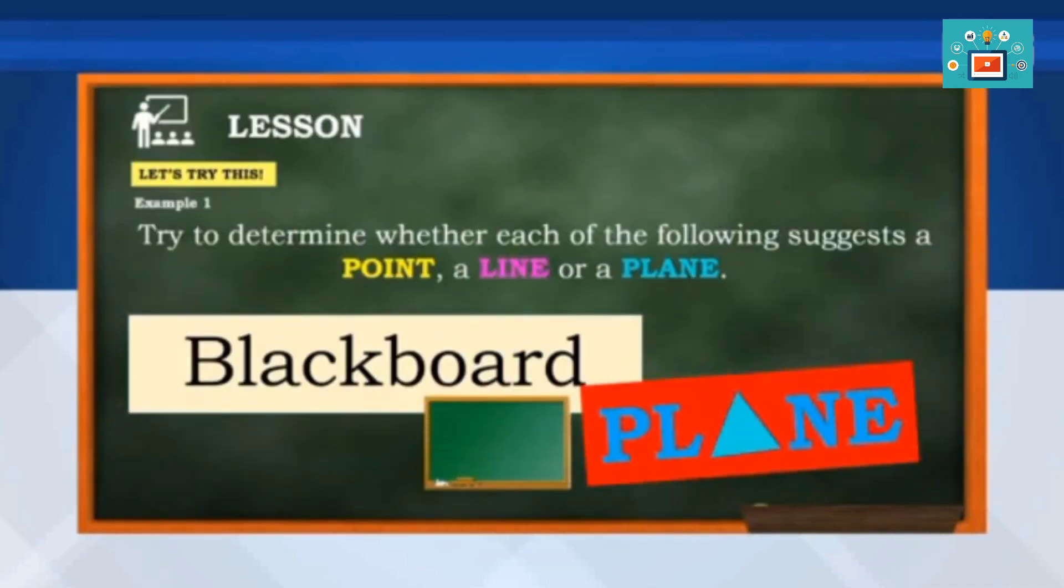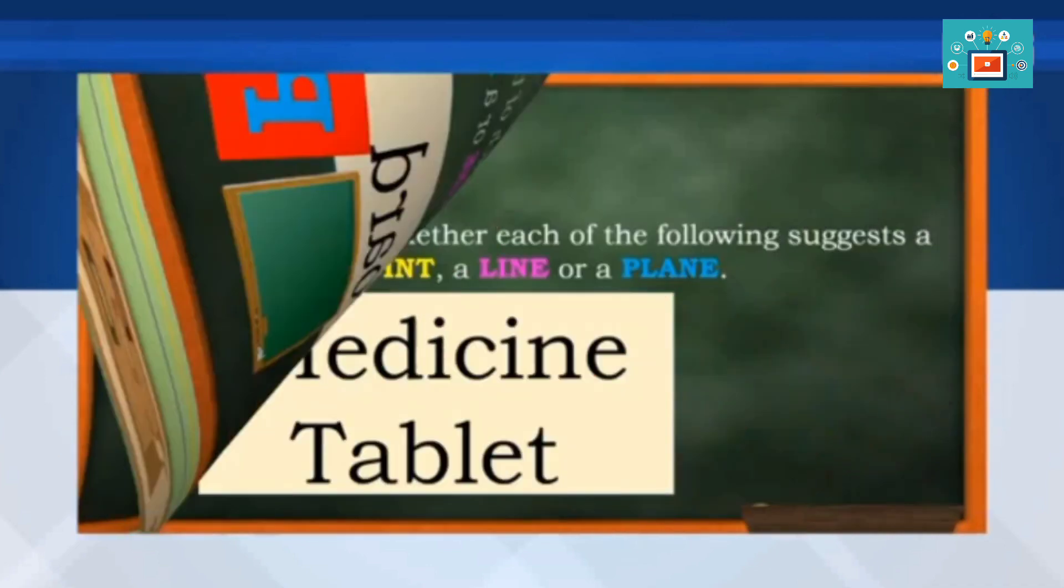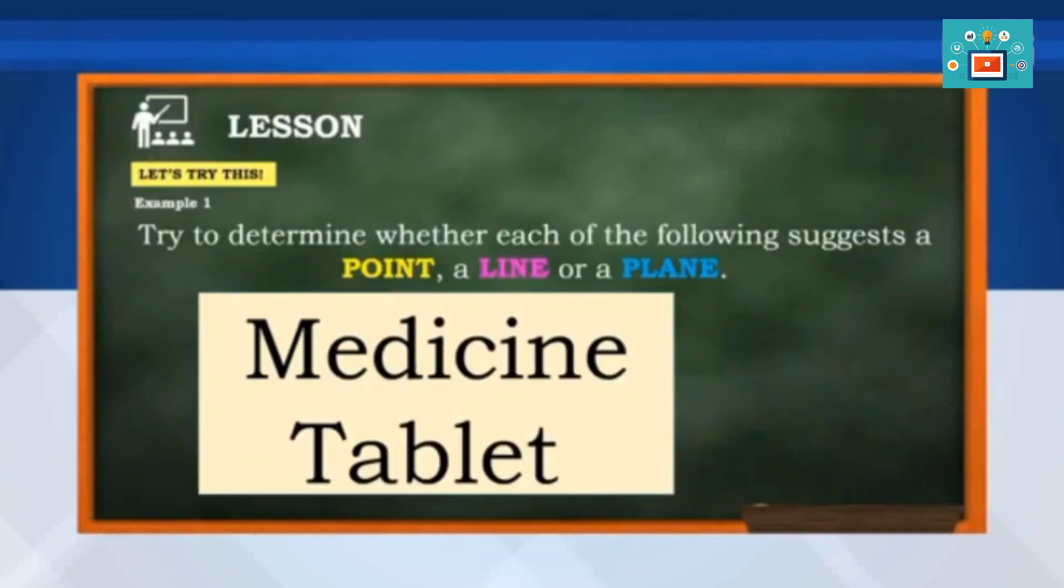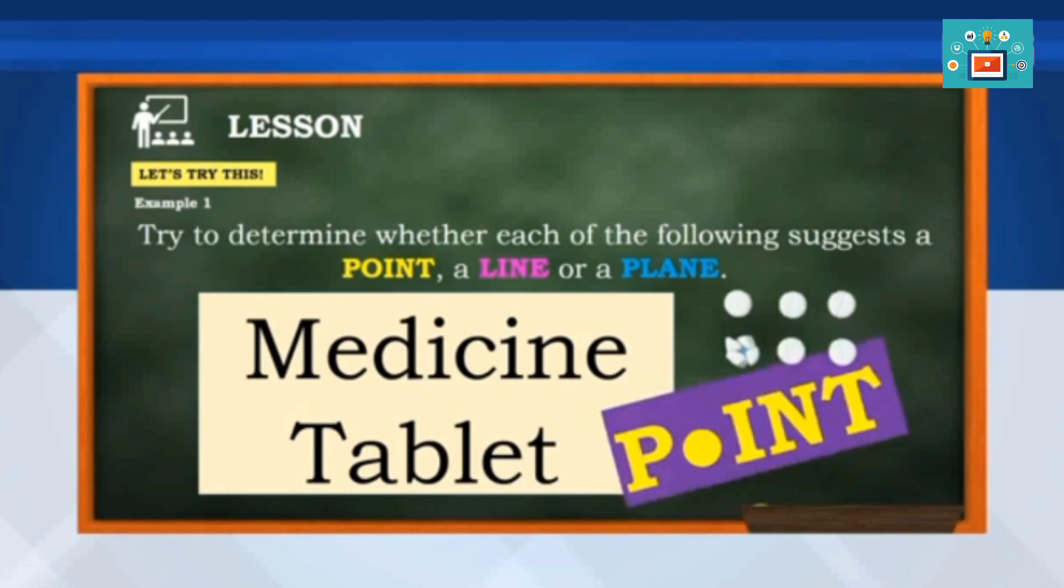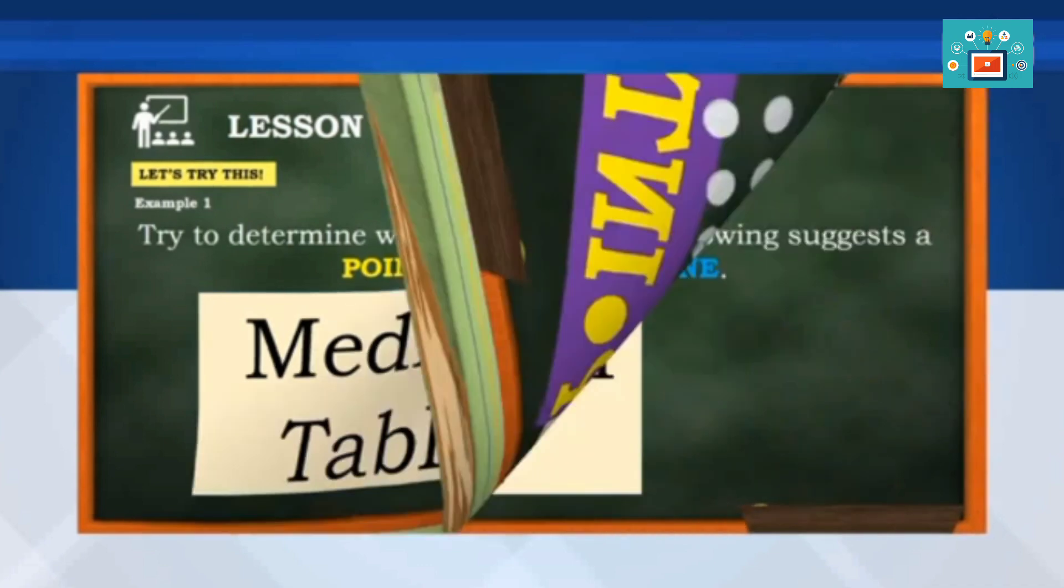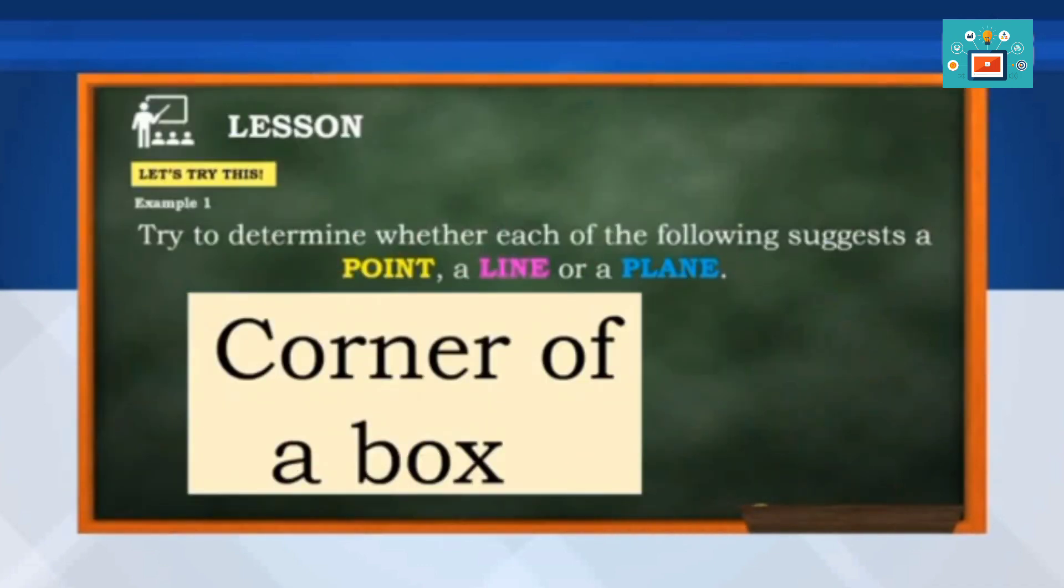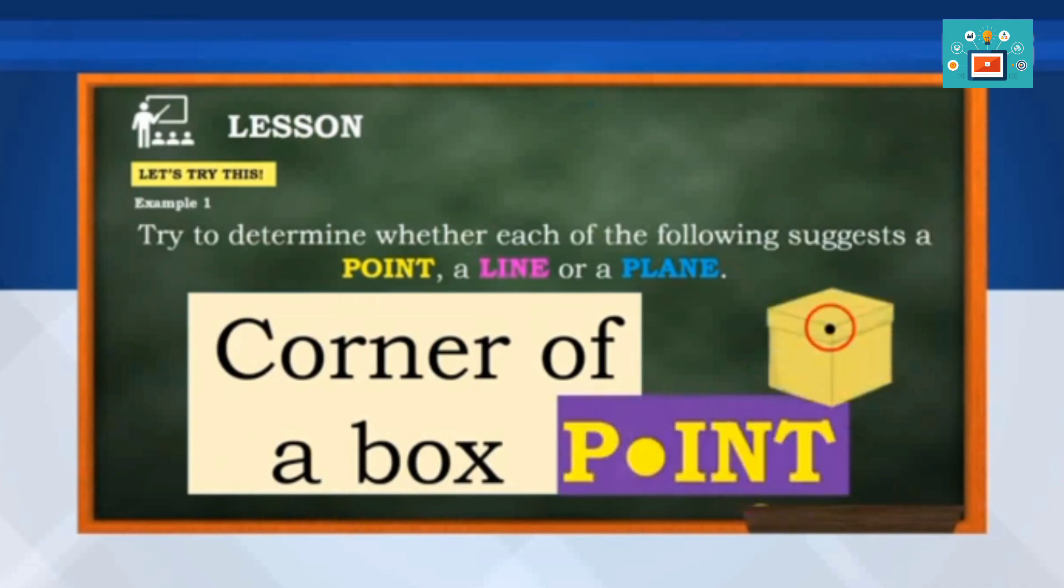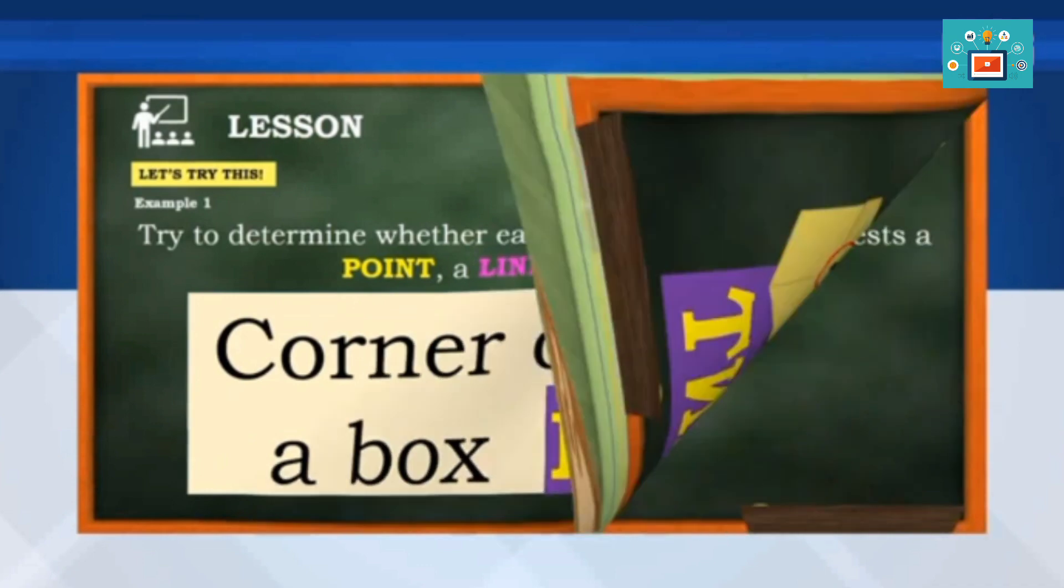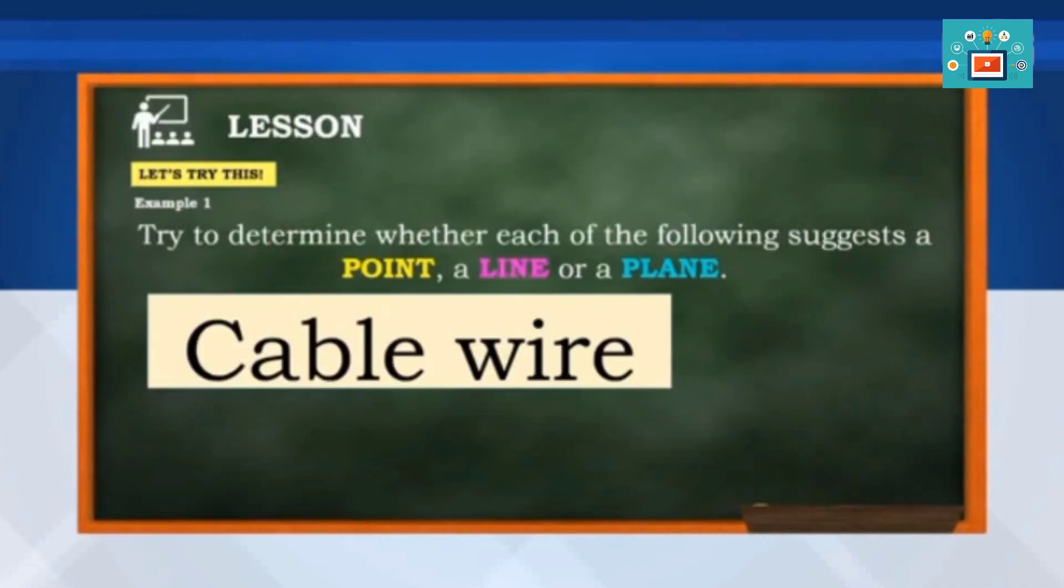Blackboard. It's a plane. Medicine tablet. A point. Corner of a box. It's a point. And lastly, a cable wire. It's a line.